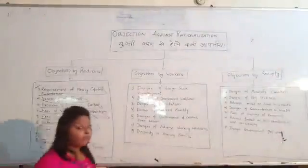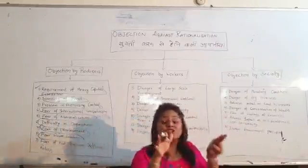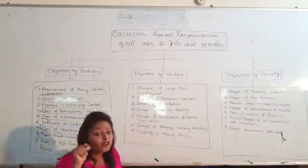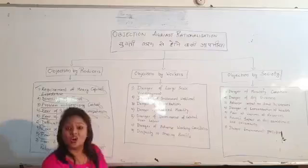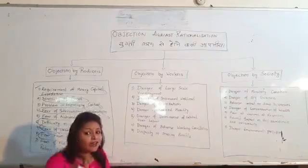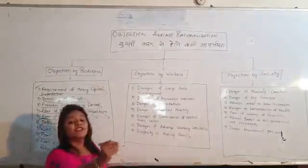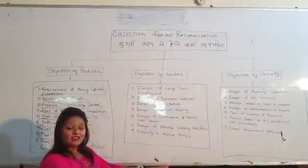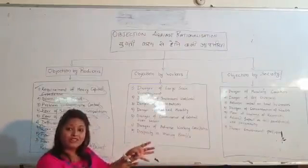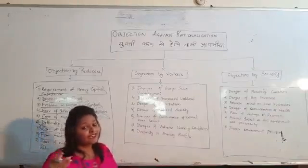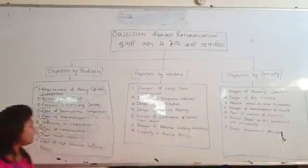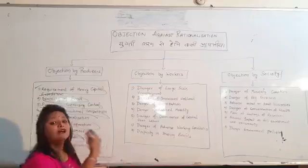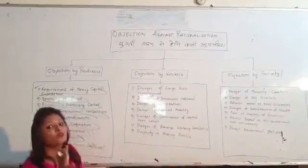Next is the fear from labor. We have studied that rationalization always increases the volume of profit. When there is a change in method and technique, the earning of profit is very high. This forces and induces labor to demand more and more wages and remuneration. Producers are very reluctant to give compensation and wages to workers, but if rationalization increases the volume of profits, laborers will definitely demand increased wages.